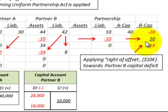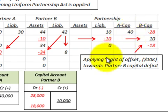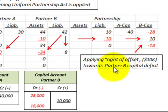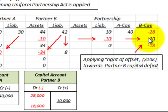Partner A's capital account was sitting at $40,000. So applying the right of offset, $10,000 was applied towards partner B's capital deficit.